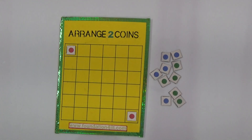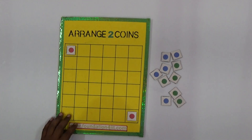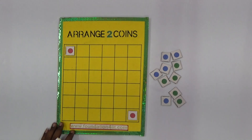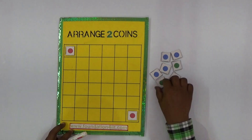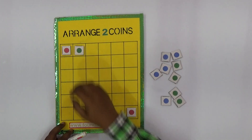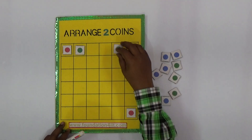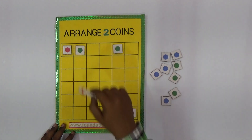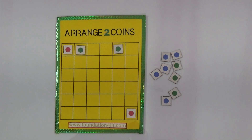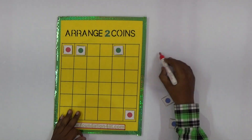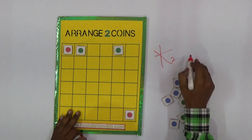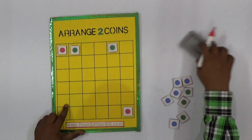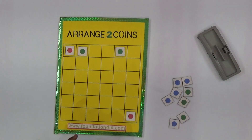The condition is: in any row or any column, only two coins should be there. So for example, if there is already one coin in a row, you can place one more, but should not place any more after that. Every row and every column should have only two coins. Even diagonals should also have only two coins.